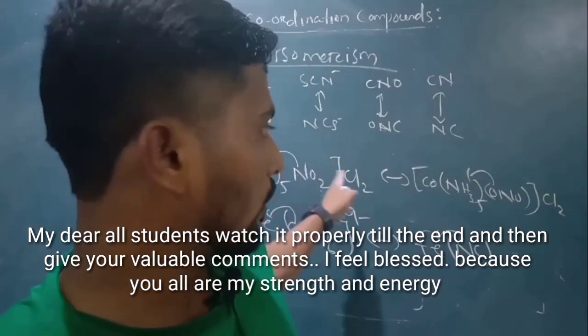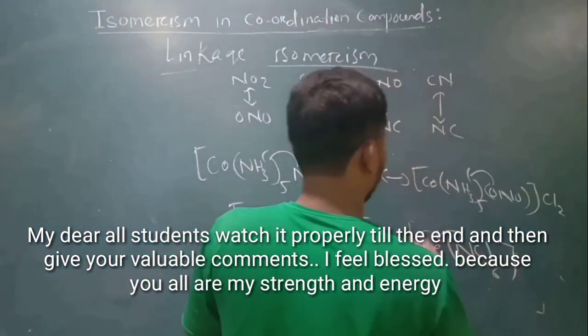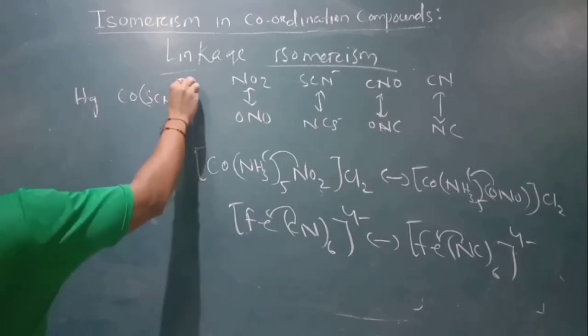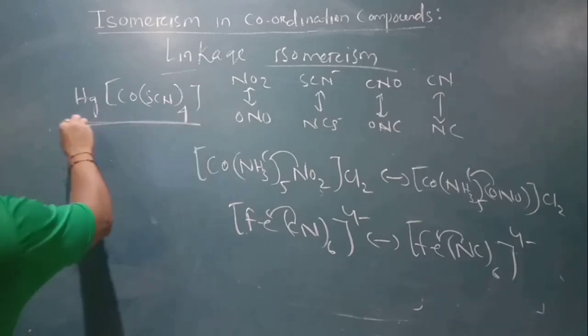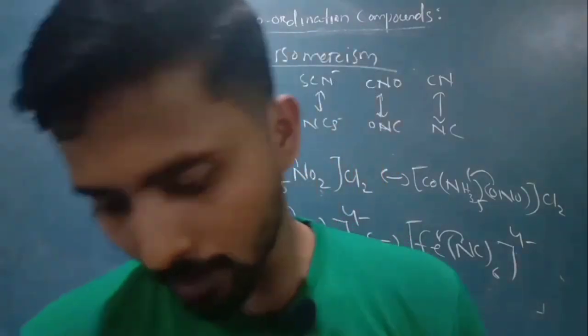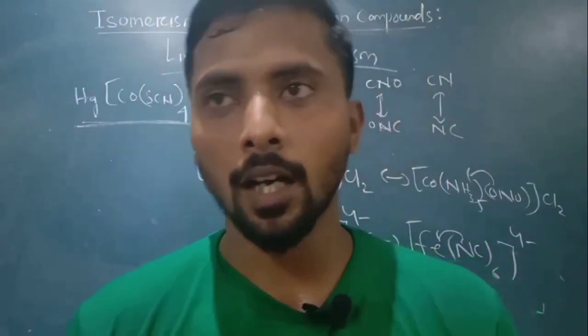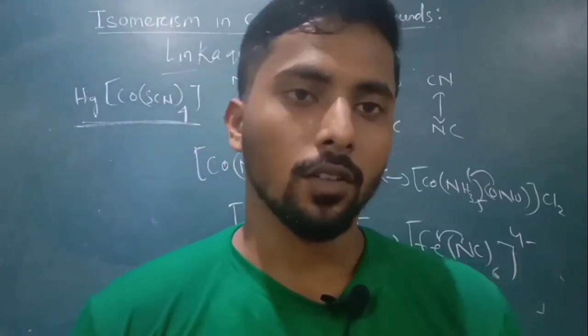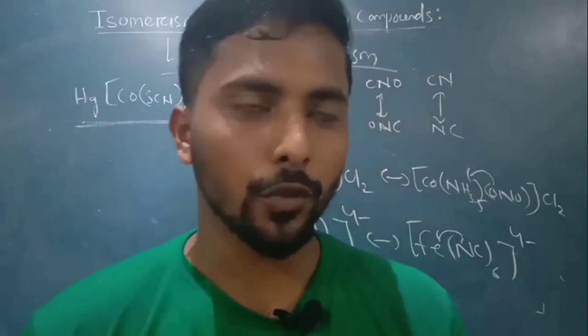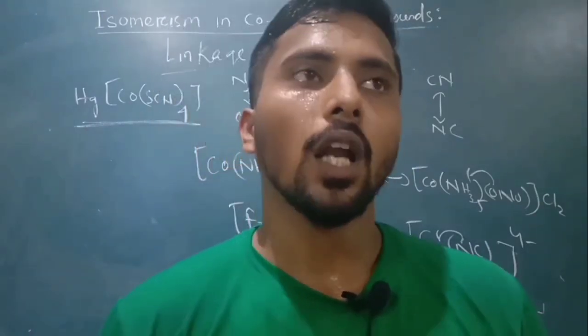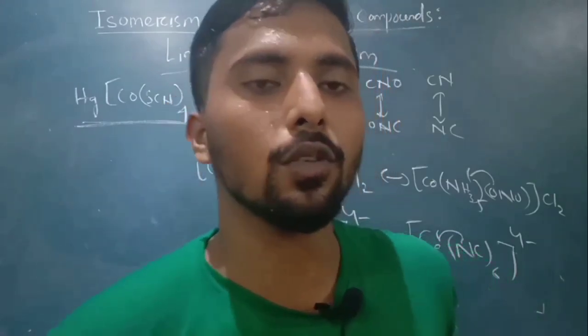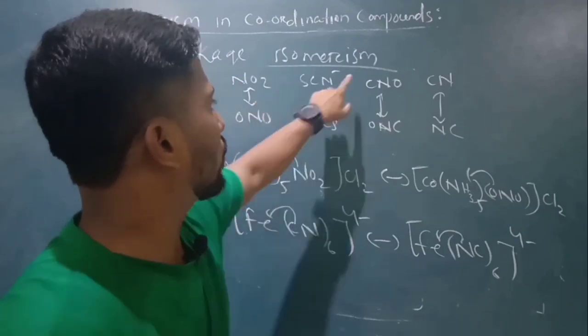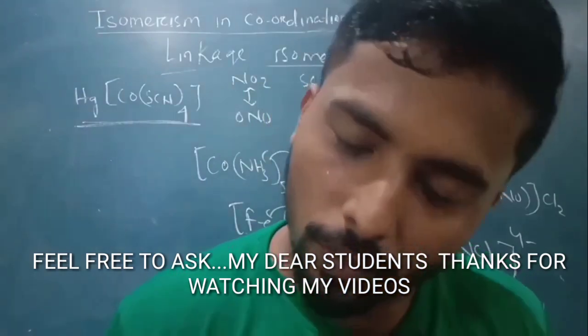This is linkage isomerism. It's shown by ambidentate ligands only, where the ligand atom connects through only one donor side at a particular instant. The complex can show either N side or O side coordination. You can learn more details from the book about how ambidentate ligands work.